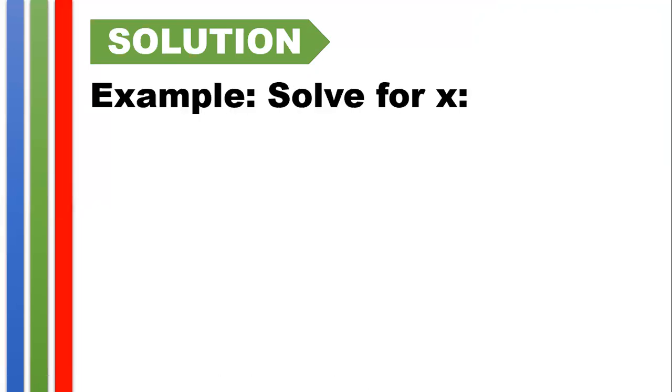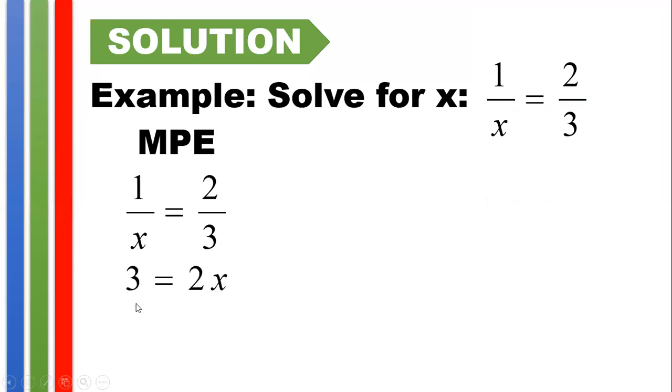So let's have a quick example. Let's solve for x in 1 over x equals 2 thirds. So to do such, if we are going to use the multiplication property of equality or MPE, from here, we will multiply both sides by 3x. And multiplying both sides by 3x, so others are using the term cross-multiplication, it's like 3 times 1, we have 3, equals x times 2, which is 2x. And dividing both sides by 2 to solve for x, we have x equals 3 halves.